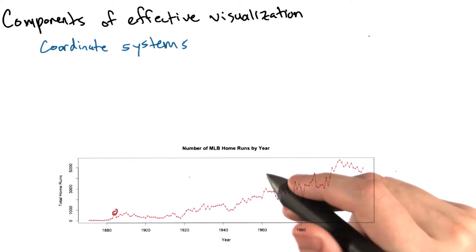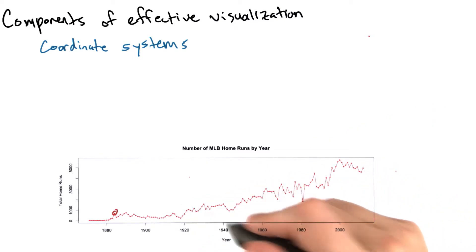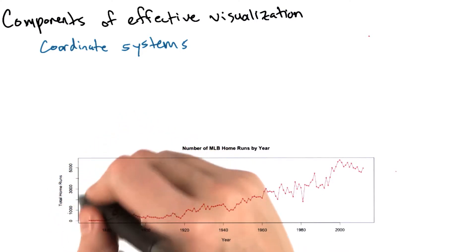For example, in this particular graphic, the x-axis represents time and the y-axis represents the total number of home runs hit.